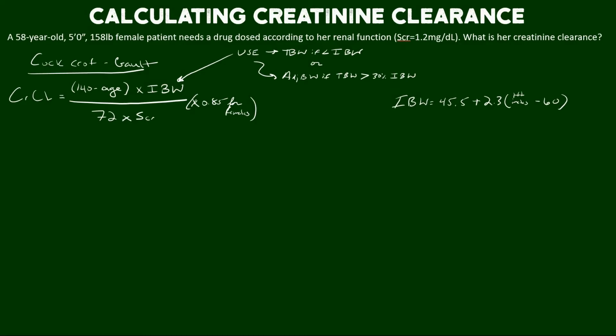So the ideal body weight for a female is 45.5 plus 2.3 multiplied by her height in inches minus 60. So let's go ahead and plug that in and solve.